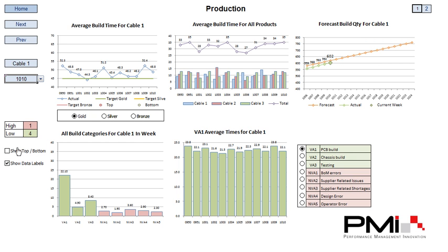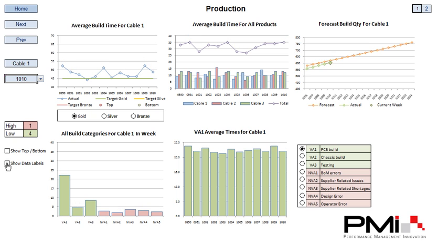Another check box that we can use is to turn on or off the data labels. By having the data labels on constantly, sometimes it can clutter the chart up, particularly if you've got many different series on one chart. So we've got a global on or off button here — click that off and it turns all the data labels on or off.